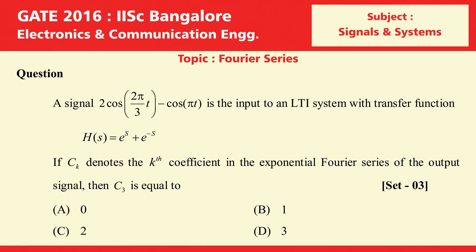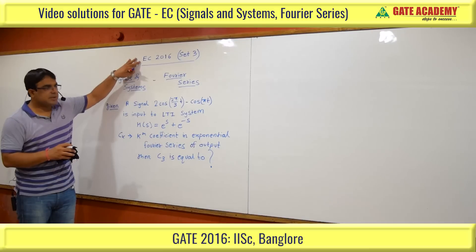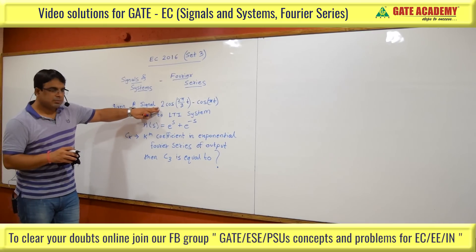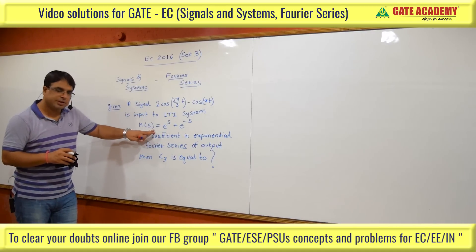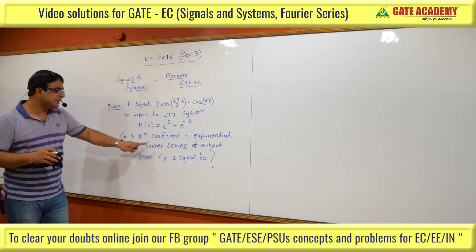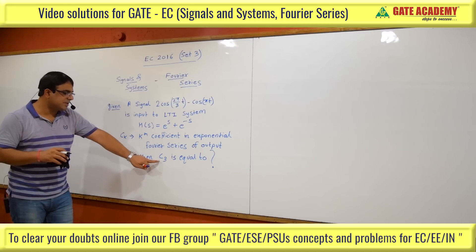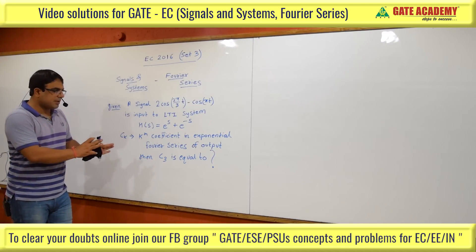Second question from GATE 2016 Set 3 on Fourier series. Signal 2cos(2π/3 t) - cos(πt) is the input to an LTI system with transfer function H(s) = e^s + e^(-s). If c_k denotes the k-th coefficient in the exponential Fourier series of the output signal, then c_3 equals: option A: 0, option B: 1, option C: 2, option D: 3. This question involves both Fourier series and system properties.